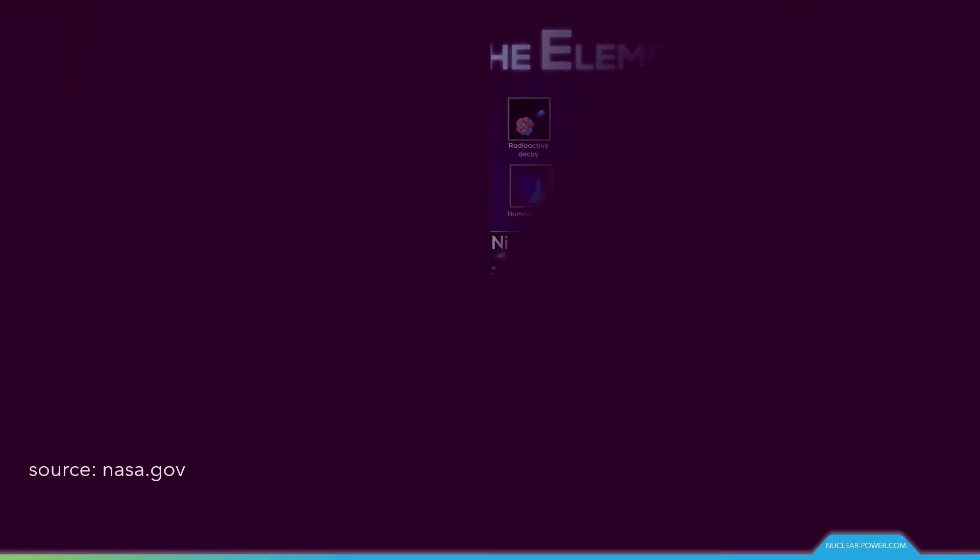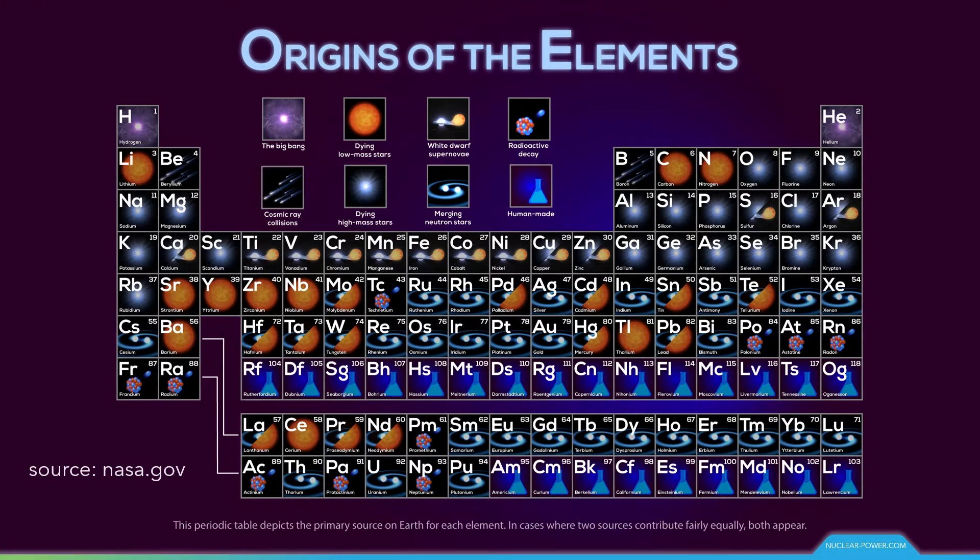Nuclear astrophysics is another branch of nuclear physics. It is crucial in explaining the inner workings of stars and the origin of the chemical elements. This periodical table of elements shows that different chemical elements have a different origin. Some were created during star collapse, some during the merging of two neutron stars, and some have been here since the Big Bang.